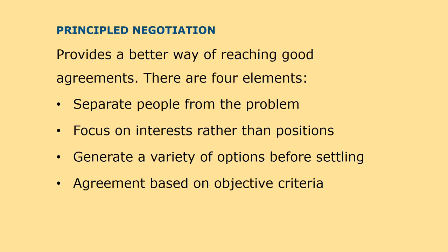Principled negotiation provides a better way of reaching good agreements. There are four elements of principled negotiation: first, separate the people from the problem; second, focus on interests rather than positions; third, generate a variety of options before settling on an agreement; and fourth, insist that the agreement be based on objective criteria.